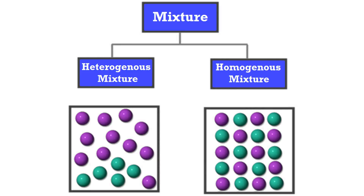We have different types of mixtures. We just talked about homogeneous mixtures where everything is evenly spread. Now we're going to talk about heterogeneous — hetero meaning other, opposite, different. You can see these particles don't evenly spread out through the entire solution; they sort of clump together, so it's not the same throughout.